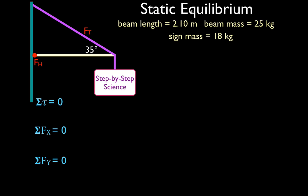There's a lot of stuff in this problem — you've got to keep track of it. Step one is to draw in all the forces. There is the weight of the sign, the weight of the beam placed right in the middle, the tension force from the cable, and the force from the hinge pushing back. Those are the four forces. Now we've got to break the tension force and the hinge force into their x and y components, since they're not acting purely in the x or y direction.